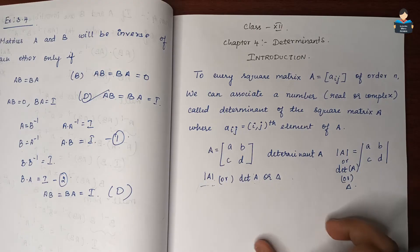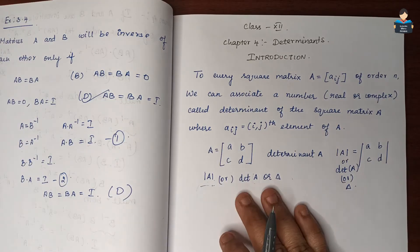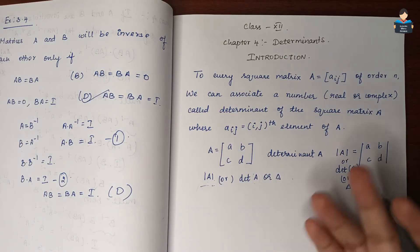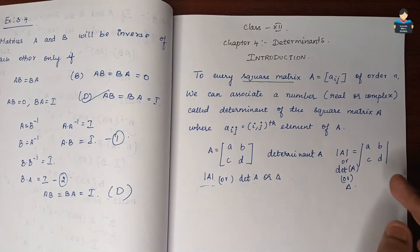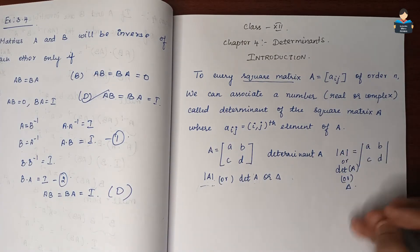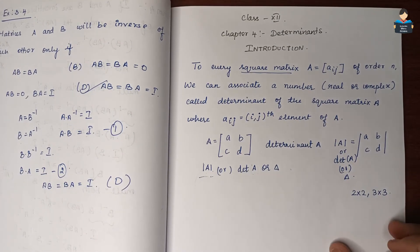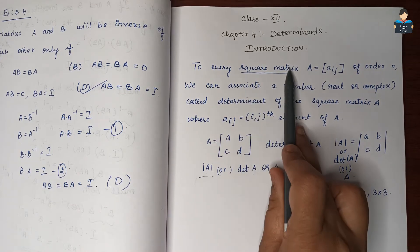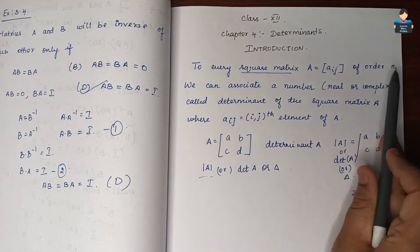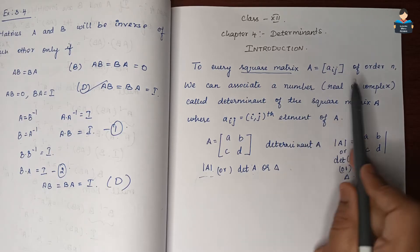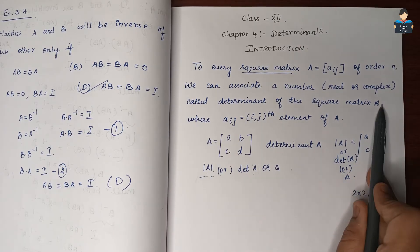So what is a square matrix of any order? It may be a 2 by 2 matrix or a 3 by 3 matrix. A square matrix is one where the number of rows and number of columns is the same. 2 by 2 and 3 by 3 are square matrices. We can associate the square matrix to a number. To every square matrix of order N, we can associate a number, and that number is a real number or complex number, called the determinant of the square matrix A.